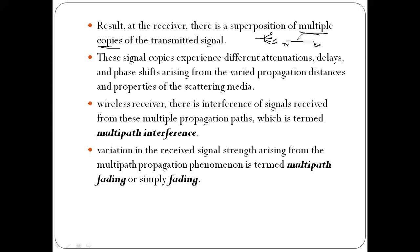Each signal copy experiences different attenuation depending on its path. The LOS path has its own attenuation, the reflected path has its own attenuation, and the scattered path causes a further drop. These copies also experience different delays and different phase shifts.